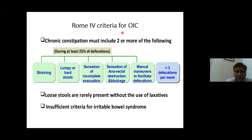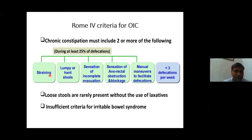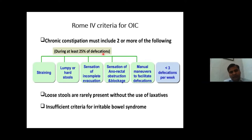Opioid-induced constipation was included in the Rome IV criteria. Under these criteria, the patient must have at least two of the following present in at least 25 percent of defecations: straining, lumpy or hard stool, sensation of incomplete evacuation, anorectal blockade, or manual facilitation of defecation. Loose stools are rarely present without use of laxatives, and there should be insufficient criteria for irritable bowel syndrome.